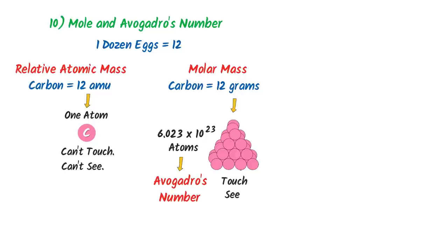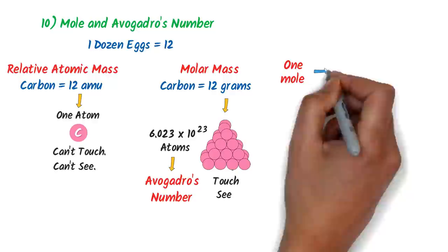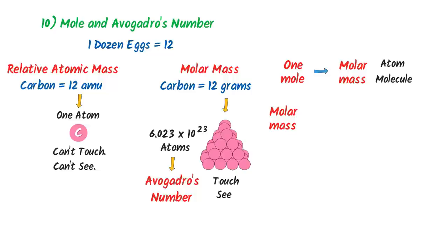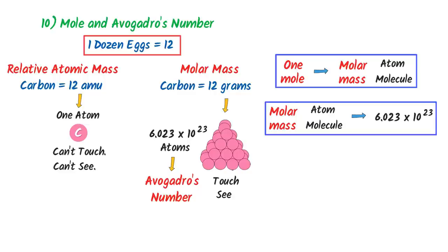One mole is always equal to the molar mass of an atom, molecule, or formula unit. The molar mass of any atom, molecule, or formula unit contains 6.023 × 10²³ particles. Remember: one dozen of anything is always equal to 12, and one mole of any atom, molecule, or formula unit contains 6.023 × 10²³ particles.